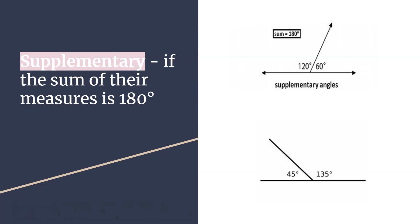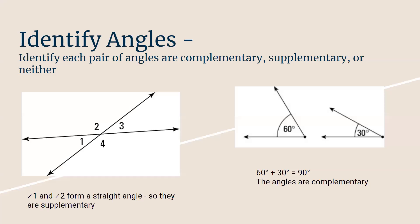So complementary is 90. As far as what you guys are going to be expected to do with this lesson, there are a couple of different examples. It's more so going to be identifying if they're complementary, supplementary, or neither.